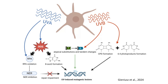Oxidative damage affects critical molecules like replication protein A (RPA). This oxidation impairs the nucleotide excision repair (NER) system, which is crucial for fixing DNA damage. As a result, repair processes are inhibited, increasing the likelihood of mutations.